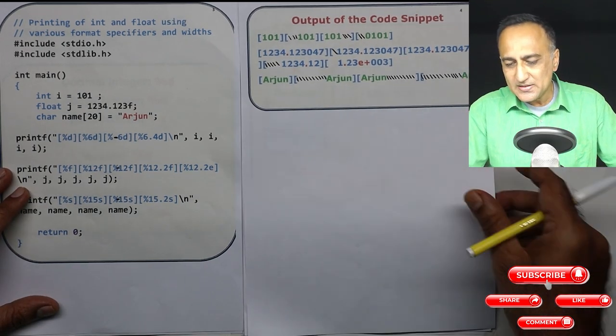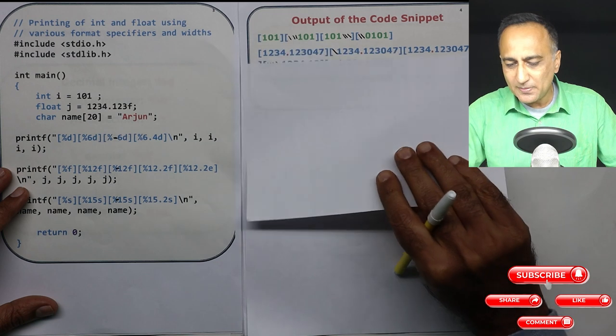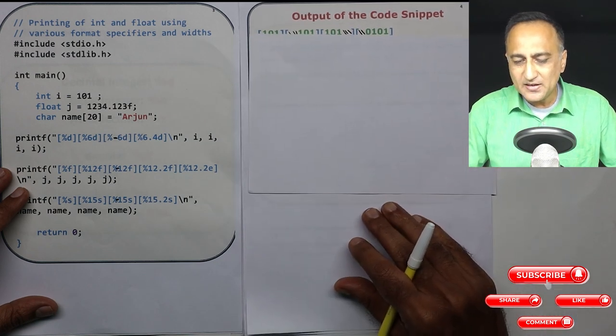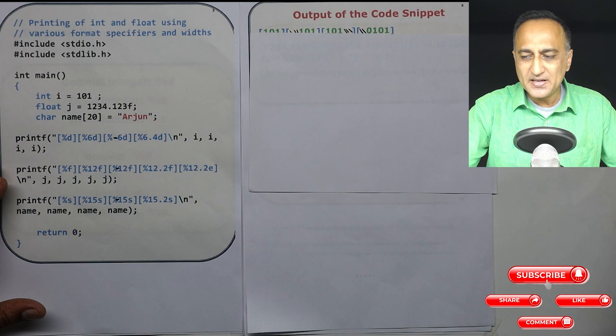What we're doing in this simple program is a couple of things. We are taking two, three types of data. We're taking numbers, we're taking integers